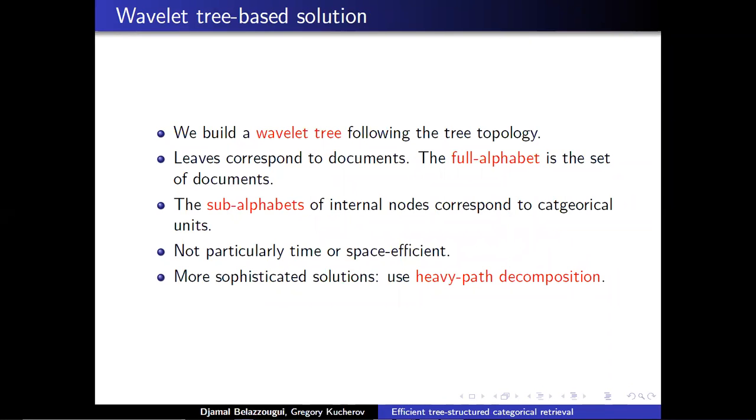In our other solution, it's based on the wavelet tree. In this case, essentially we can use a wavelet tree for which the topology is exactly the topology of the categorical tree. Once again, this solution could be inefficient if the height of the tree is very large. But we can use standard heavy path decomposition and a more sophisticated way to get better worst case performance for the problem.